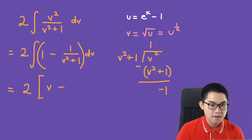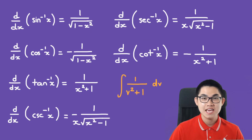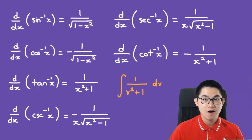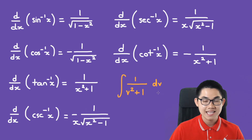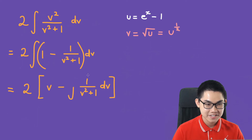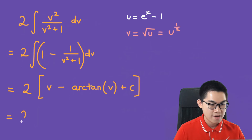If you remember your trigonometry derivatives, you'll recognize this integral. The derivative of arctan is 1 over x squared plus 1, so the integral of 1 over v squared plus 1 dv is arctan of v plus c. Therefore we have 2v minus 2 arctan of v plus c.